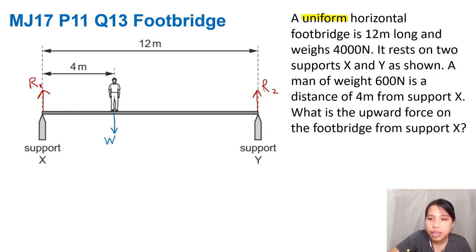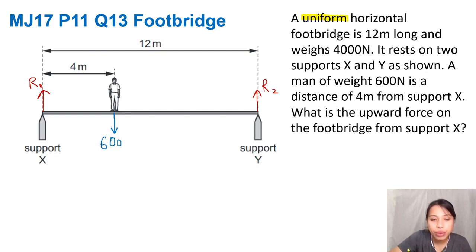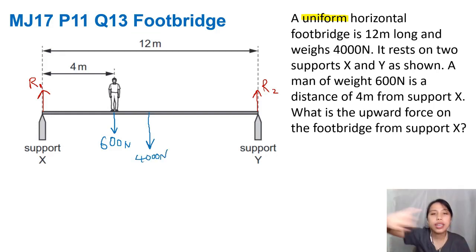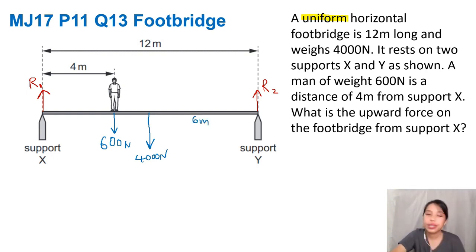They told us the man weighs 600 newtons, so 600 is the man's weight. And you have the footbridge center of gravity — since it's uniform and horizontal, it has to be dead in the middle: 4000 newtons. So if the whole footbridge is 12 meters, this side will be 6 meters and the other side 6 meters. We've got our forces — double check, yes.